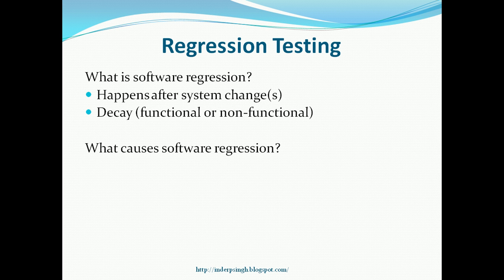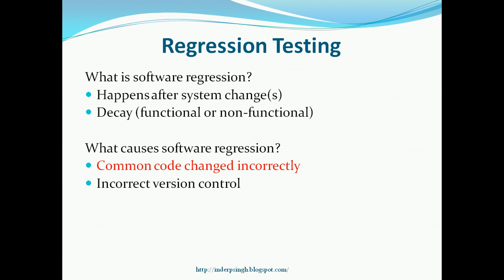What causes software regression? One of the more common causes is that the common code being used by different software components is changed incorrectly. So whereas the component is working fine with one feature, it may not work fine with other features. Another cause can be incorrect version control. Software developers always put their code within a version control system, and if version control is used incorrectly, it is possible to overwrite changes made by someone else or overwrite previous changes, which can cause software regression.